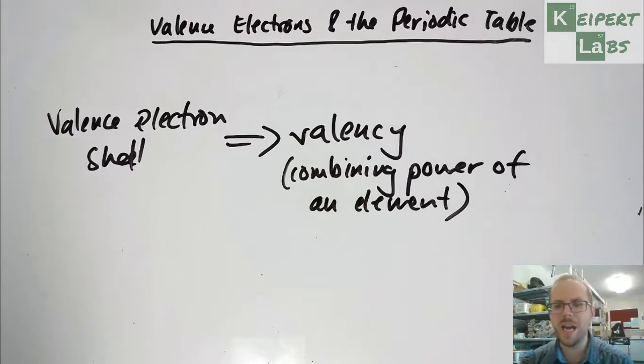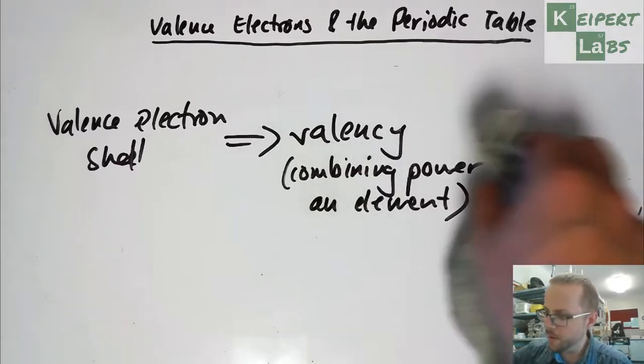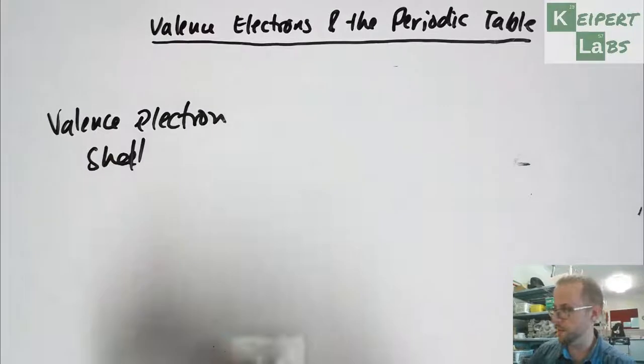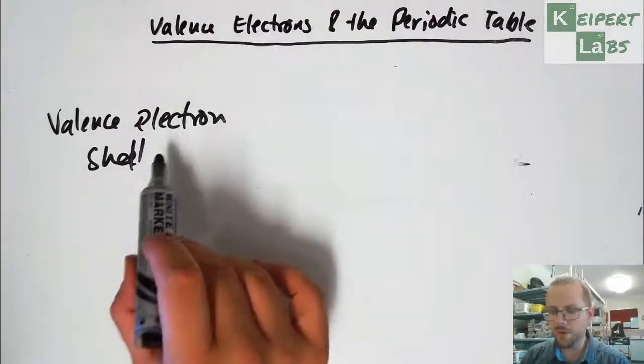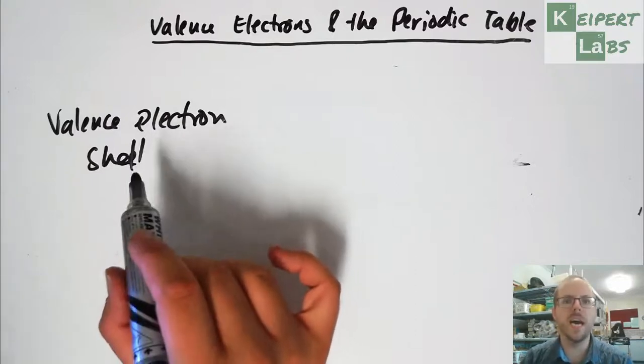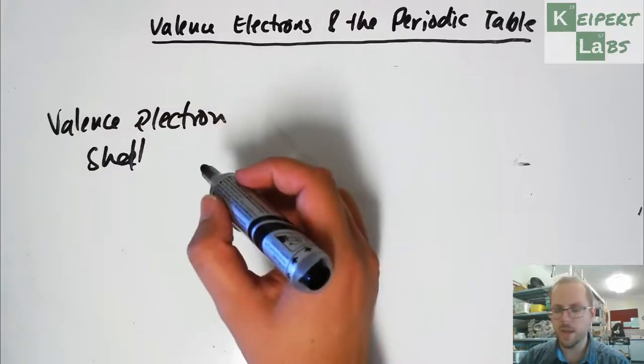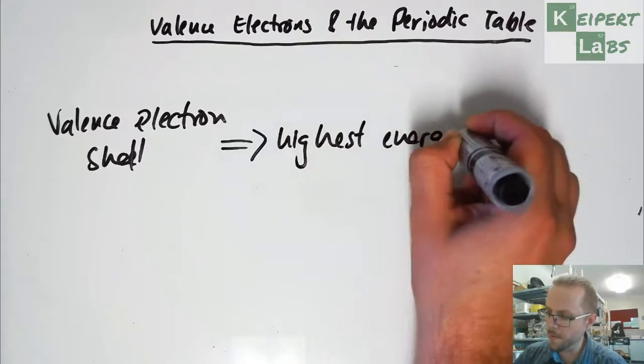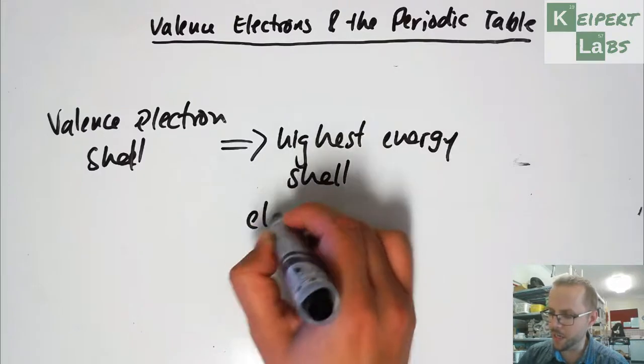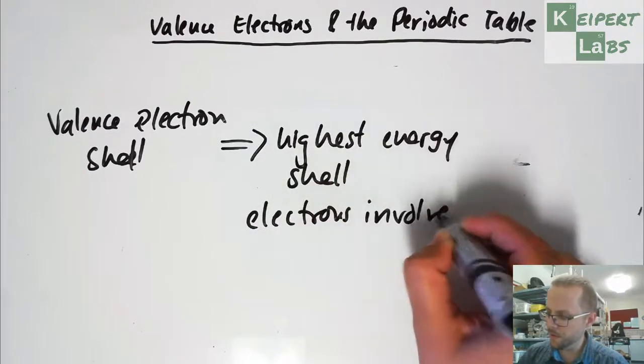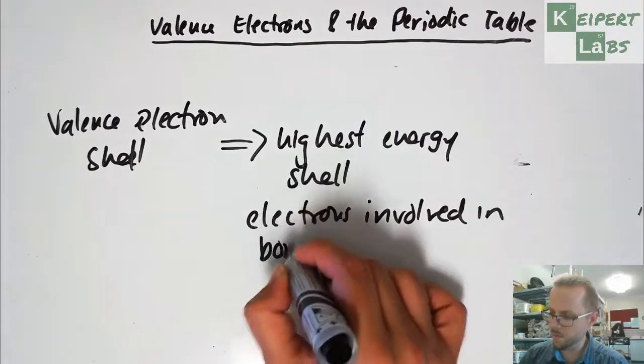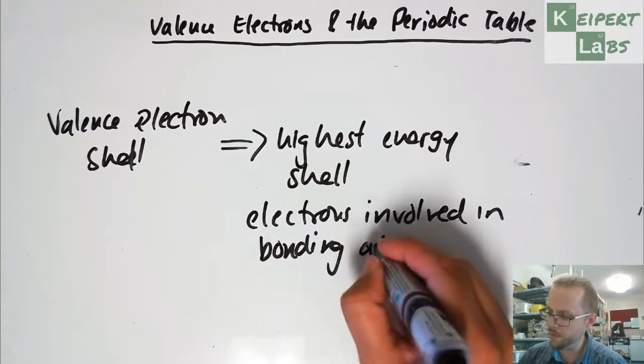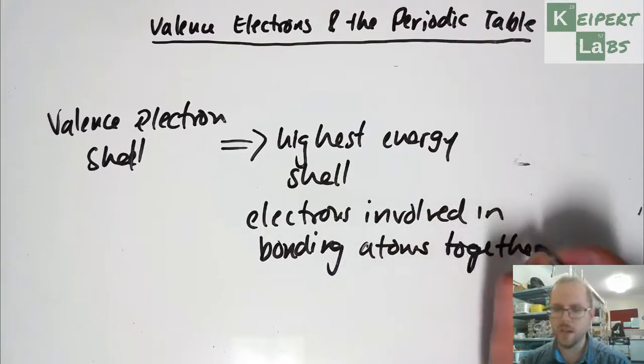And then what happened was that as we could recognize that electrons were involved in actually connecting one atom to another, we'll go into that in a future video in a bit more specific detail, that there are electron shells that were responsible for the way that atoms kind of connected to each other, and they're called the valence electron shell.